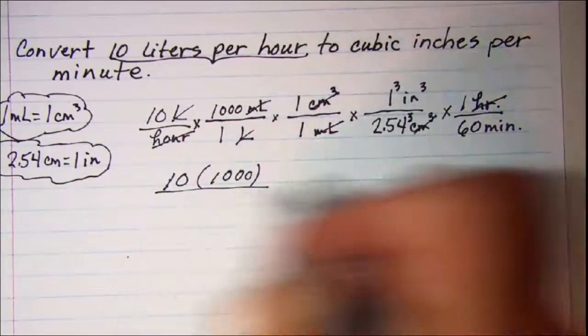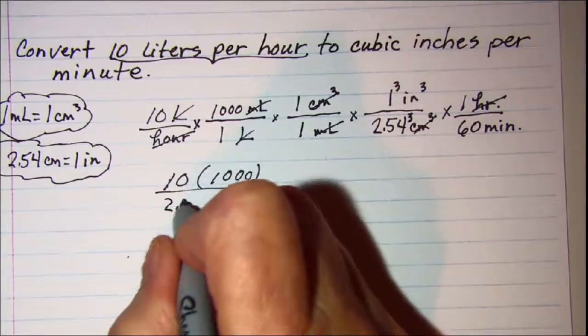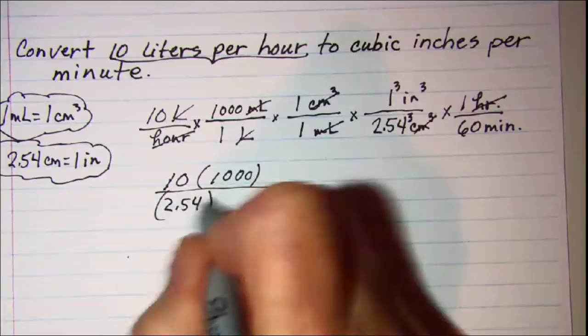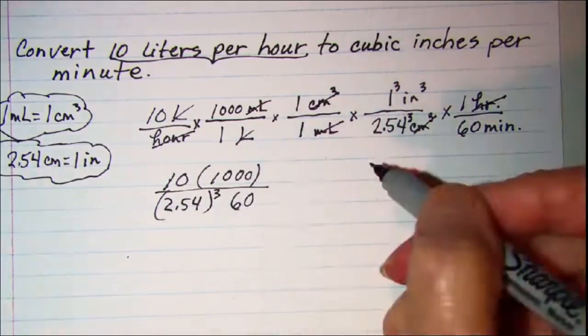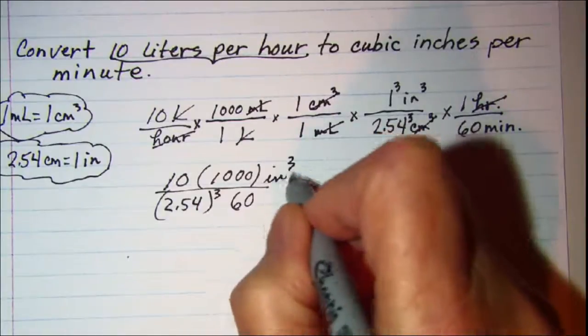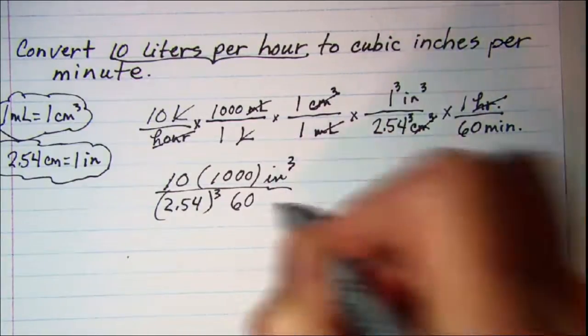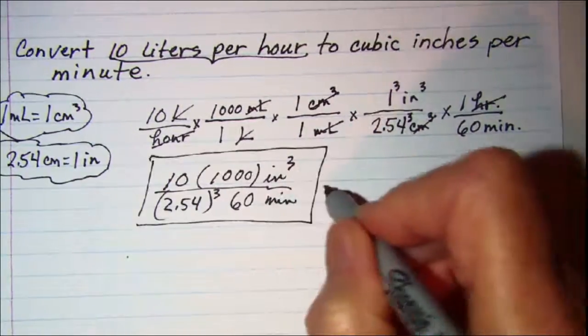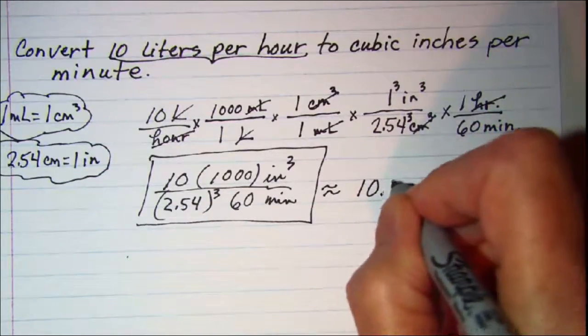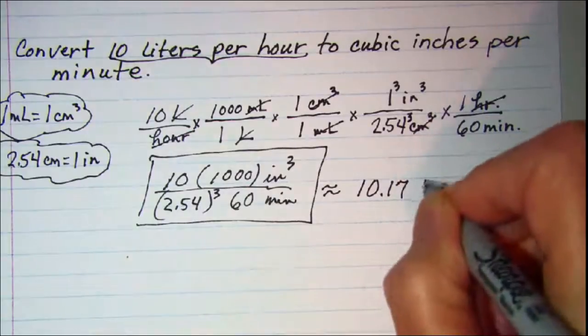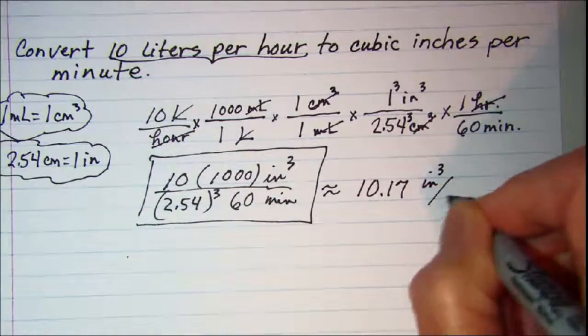Divided by 2.54 cubed, and also divided by 60 inches cubed per minute. If we put this in our calculator, we'll get approximately 10.17 cubic inches per minute.